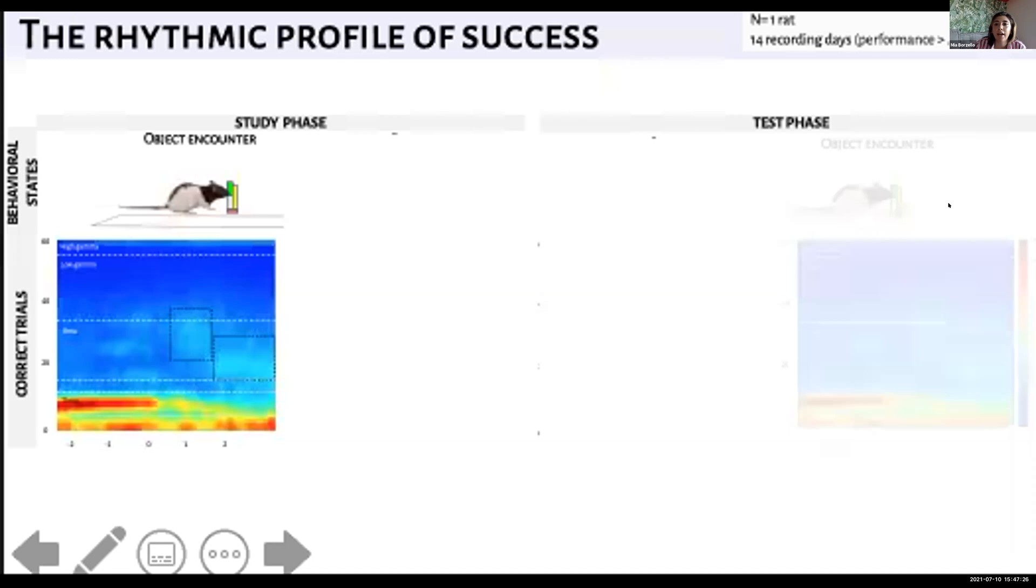Here, I'm showing you the average spectrogram across several sessions. The x-axis is time in seconds and the y-axis is frequency information. The zero indicates the object encounter time point and warmer colors indicate higher amplitude. Initially we looked at the object encounter time point for correct trials, which occurred during both study and test phases.